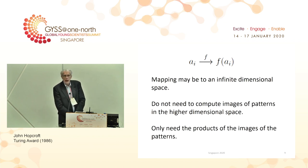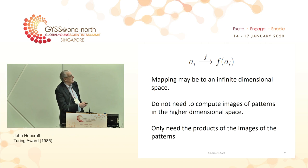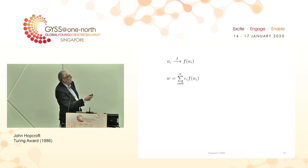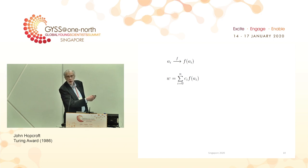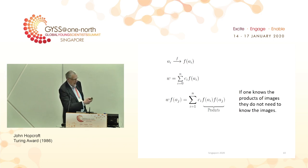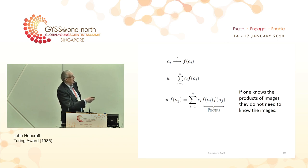This mapping may be to an infinite dimensional space. It turns out you do not need to compute images of the patterns in the high dimensional space — one only needs products of the images. I take my pattern, think of it in a high dimensional space where f maps it there, and I have a weight vector. If I run this algorithm in the high dimensional space, the weight vector will be a linear sum of these images. To check if a pattern is classified correctly, I multiply its image times the weight vector. But I don't need to know f — all I need is the product of f(ai) and f(aj).